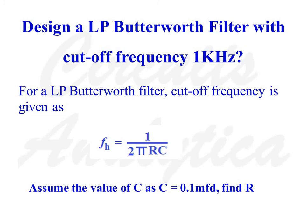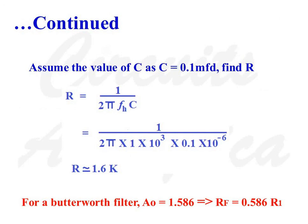It is better to assume the value of C and find the value of R. Let C = 0.1 microfarad. We can write R = 1/(2π·Fh·C) = 1/(2π × 1×10³ × 0.1×10⁻⁶). So R is approximately equal to 1.6 kilo ohms.